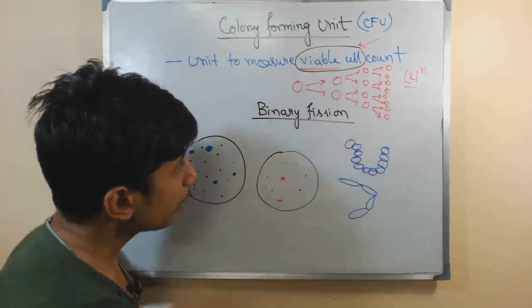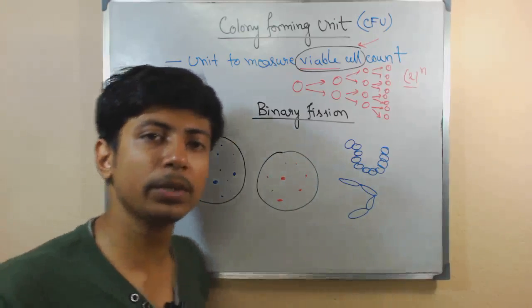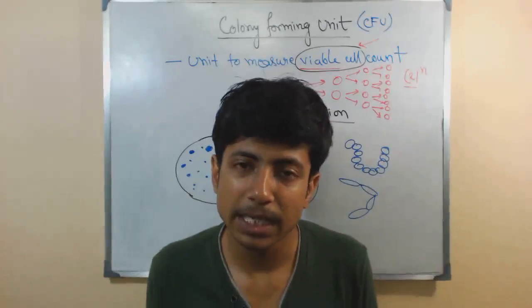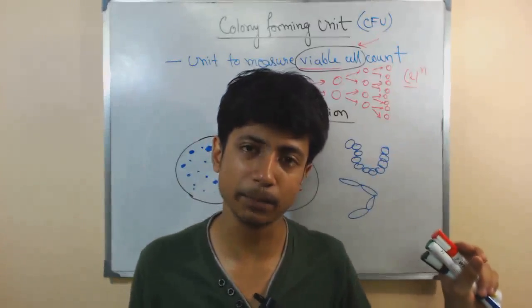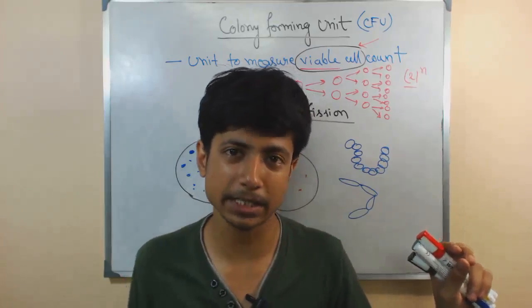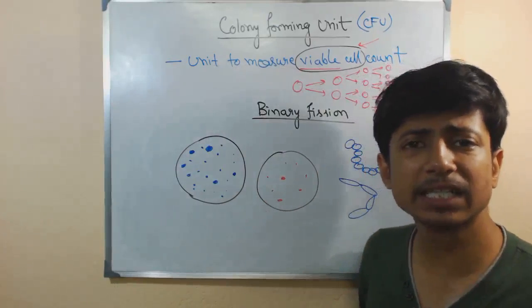Now why do we require Colony Forming Unit? We need to know the Colony Forming Unit to know the number of viable cells. Let's say there is a culture present in our lab. We want to test that culture before using it for other techniques, because if the culture is not viable enough, if the culture is containing dead cells, we don't want that culture to be used in other experiments.